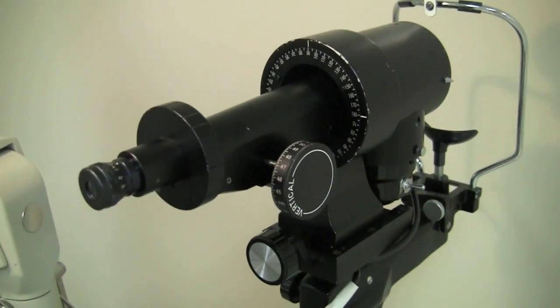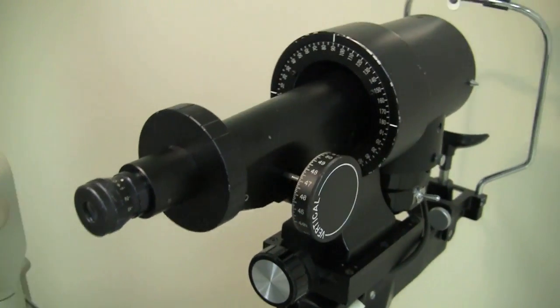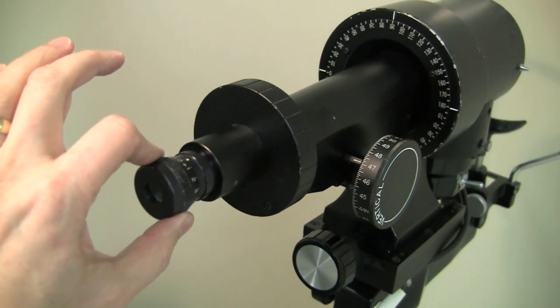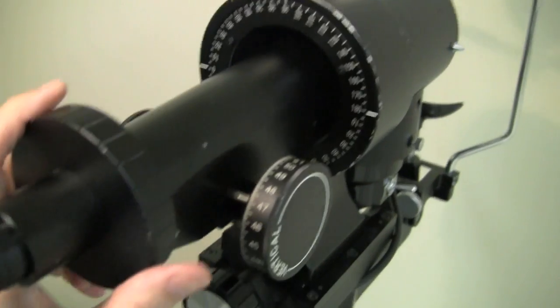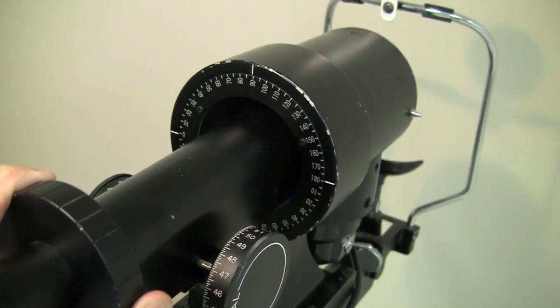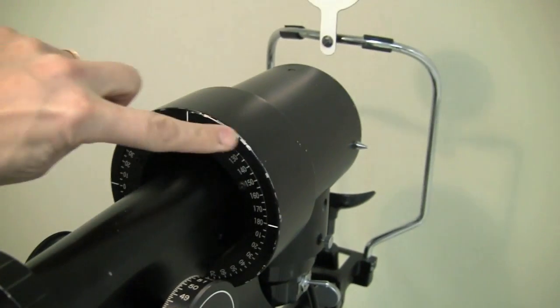There are a few features of the instrument that you're probably already familiar with. This knob focuses the eyepiece, which is an important first step in using the instrument. You can turn the barrel of the instrument like this to try to measure different astigmatic axes for the cornea. And you see the protractor scale here.